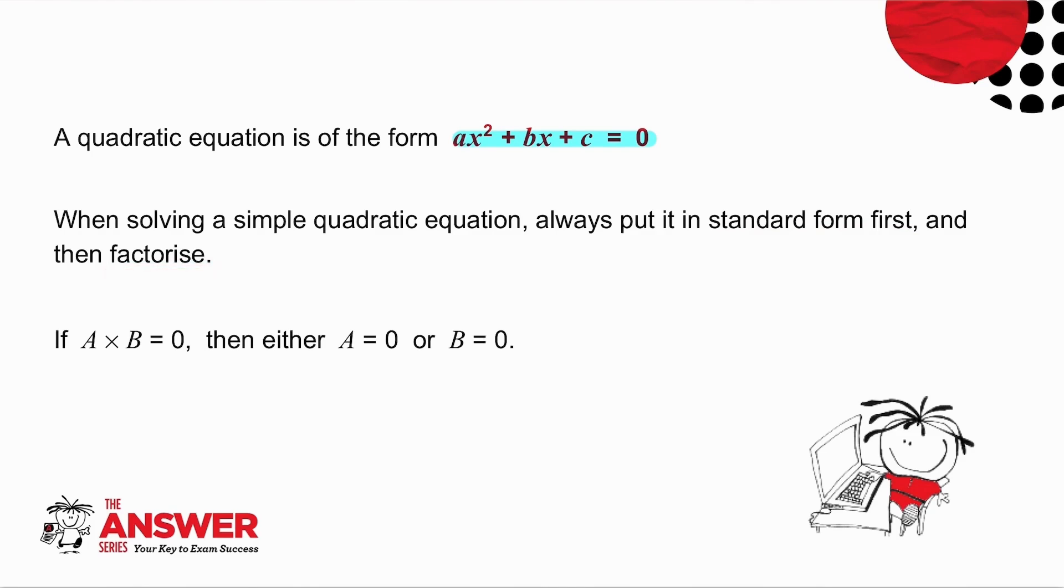And don't forget, if a times b is 0, then either a is 0 or b is 0. So if you want the product of two things to be equal to 0, the only way you can get that is if one of them must be equal to 0.